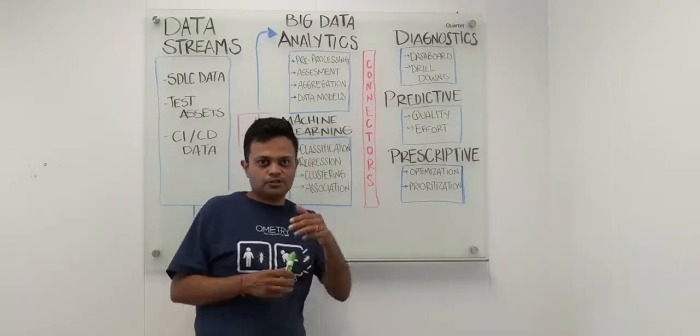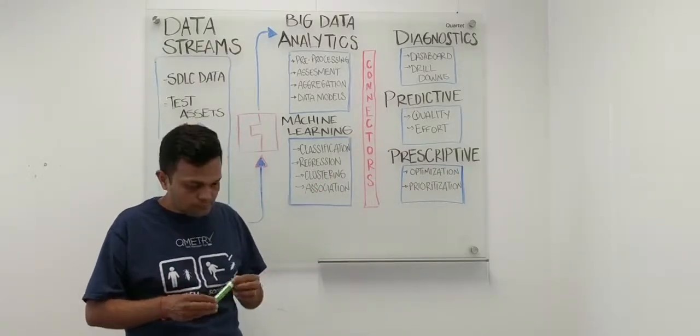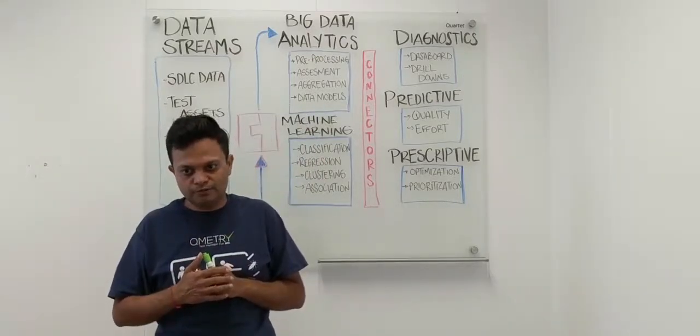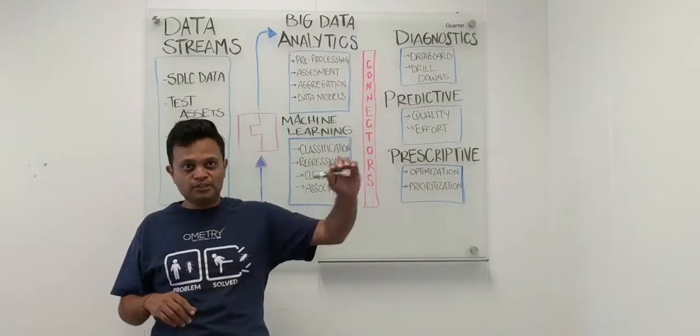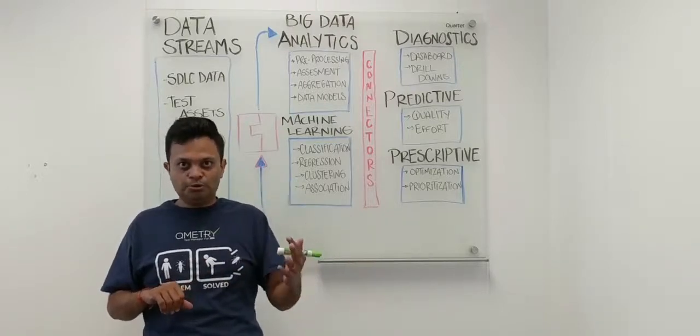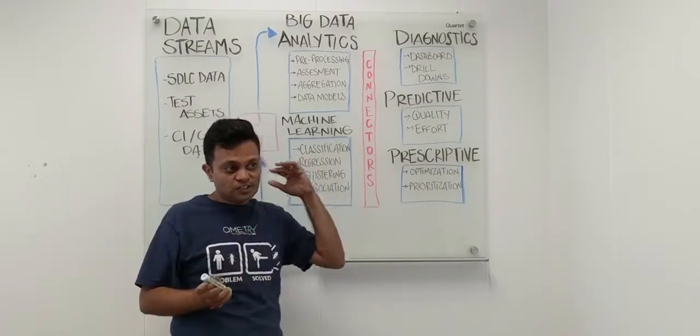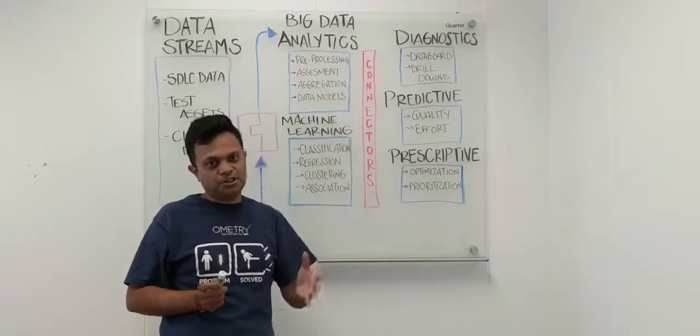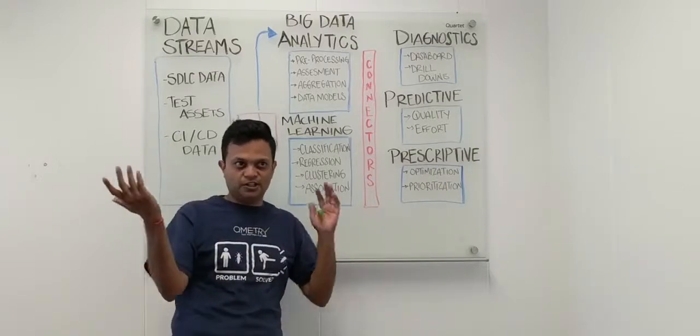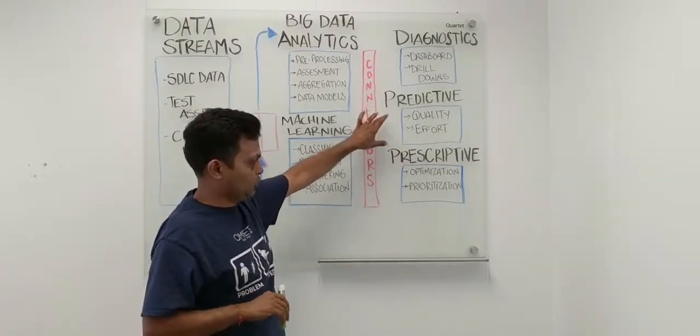Now let's talk about the second part of it, which is also very important and which is predictive. And that's what predictive quality analytics is all about. It predicts how you can improve your quality. For example, it gives you an idea that if you improve this set of test cases, your overall software quality would be improved by let's say 40%, or if you work on this particular set of bottlenecks, your output of software quality would improve exponentially or whatever in exact quantifiable terms. It will give you an idea.